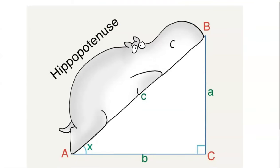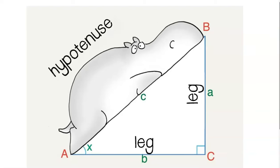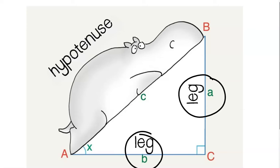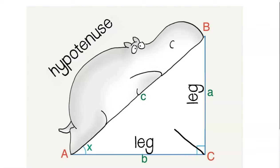Let's talk about the words used to describe a right triangle. The longest side is called the hypotenuse. The two other sides are called the legs. The legs are what make the right angle — the two legs always touch the right angle, and the hypotenuse is always across from the right angle.